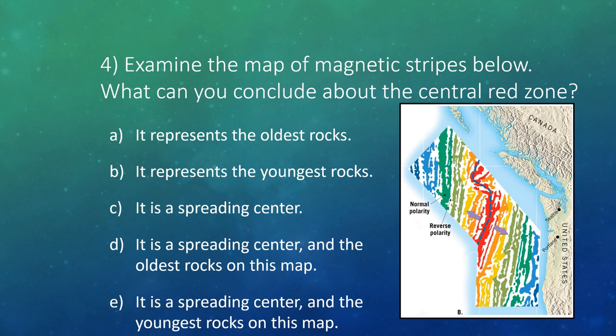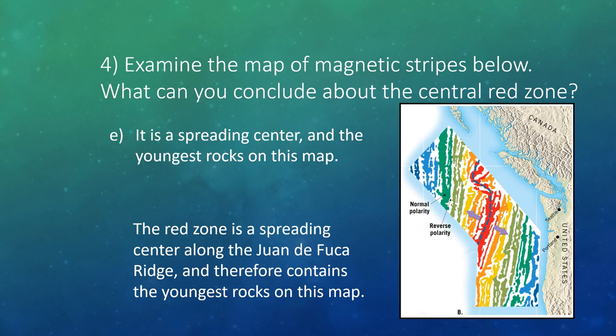Question 4: Examine the map of magnetic stripes. What can you conclude about the central red zone? The answer is E: it is a spreading center, because the two regions are moving apart and it shows the youngest rocks on the map. In the center — at the Atlantic Ridge or any ridge — new mantle material is flowing up through the center and generating new lithosphere. This material is young and then gets pushed away, so further material is progressively older.